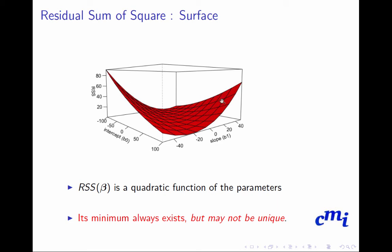Which choice do you pick? You choose where the error sum of squares is minimum, because you want to reduce the error as much as possible — wherever it is minimum, in the valley, you choose that β. A minimum always exists, though it may not be unique.